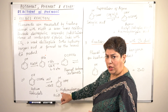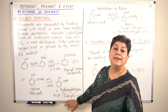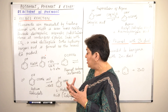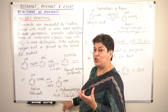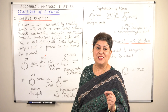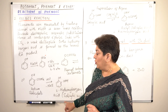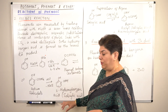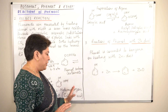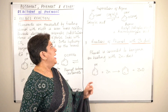The IUPAC name of the product is 2-Hydroxy Benzoic Acid and the common name is salicylic acid. Kolbe's reaction is given so much importance because aspirin — a very commonly used medicine — is prepared from this salicylic acid. Although the next step is not in the textbook, Kolbe's reaction ends with salicylic acid, which is then used in the preparation of aspirin.